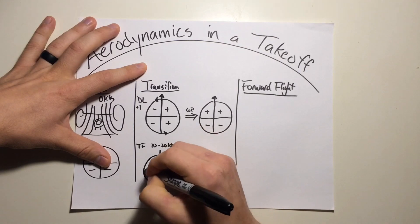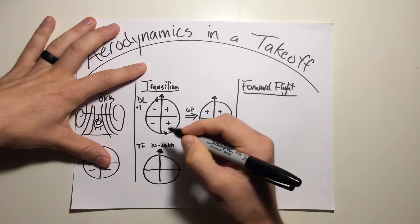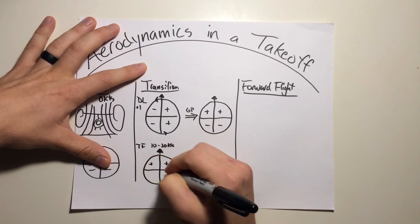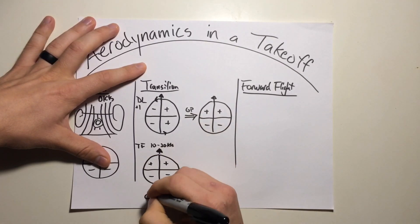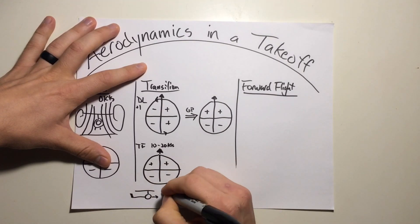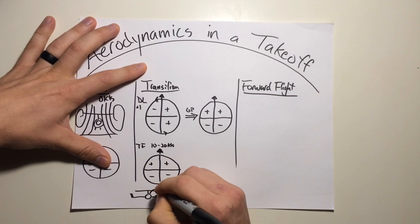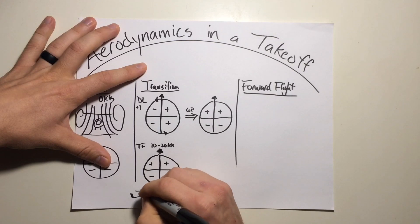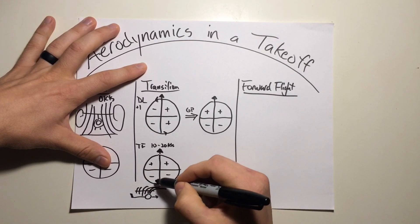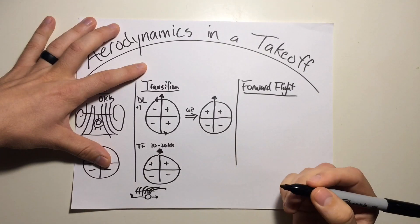So what does that mean for us? Transitioning forward, it's going to result in more lift on the front half of the disc than the aft half. So quick review on that one: as our helicopter transitions into forward flight, this airflow is more horizontal over the front half and becomes more vertical over the aft half. So more induced flow, less lift, less efficient on the aft half than the forward half.